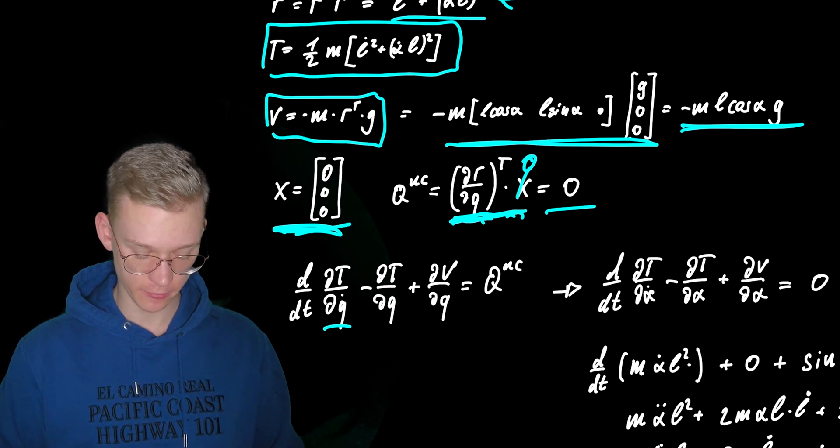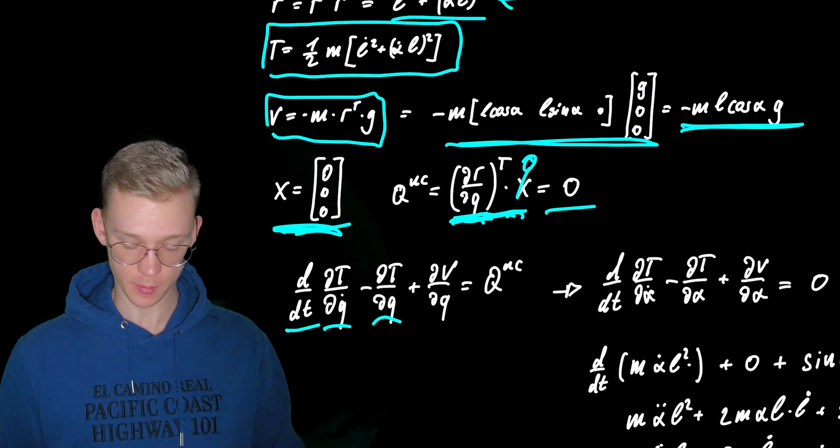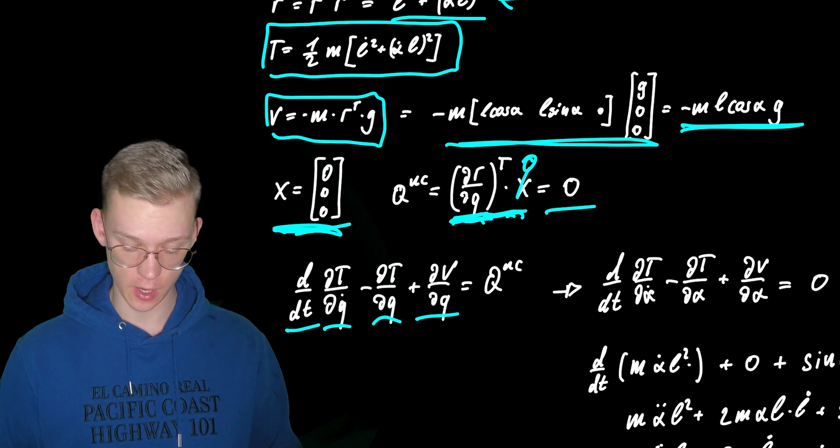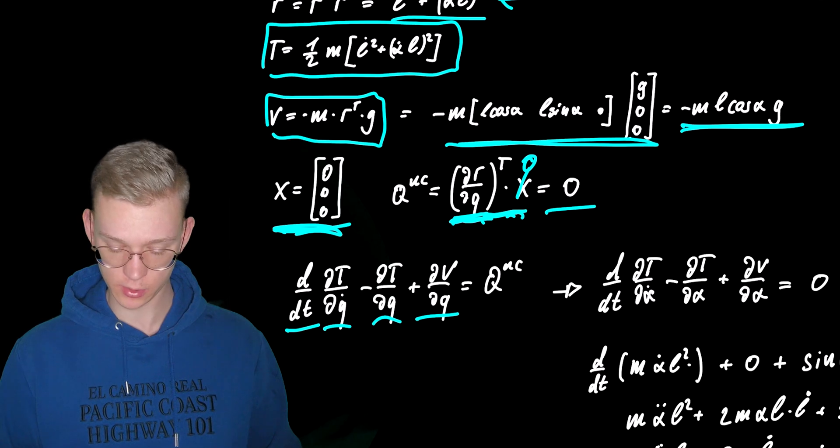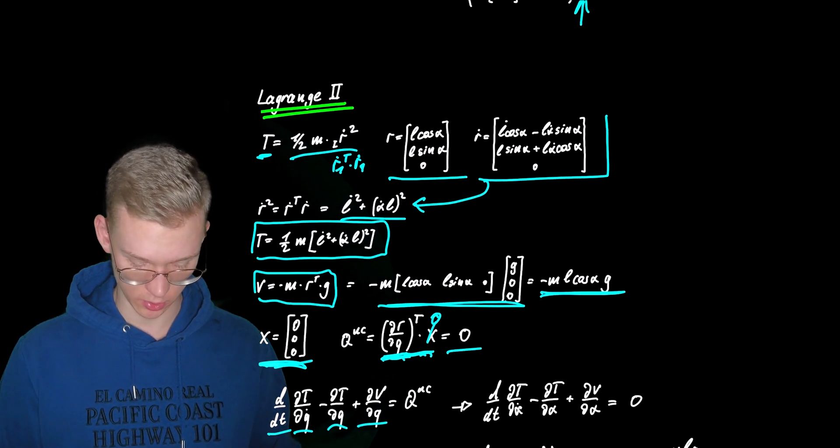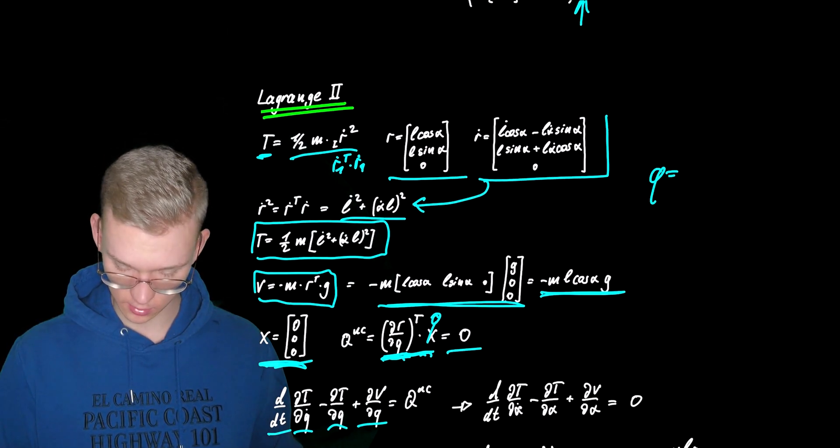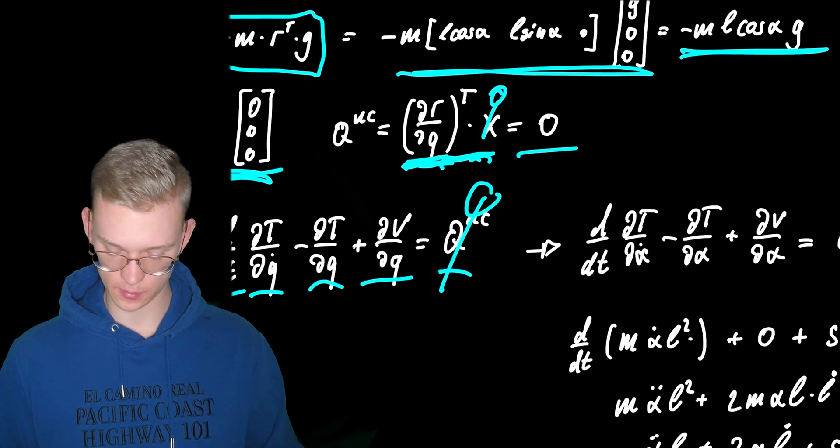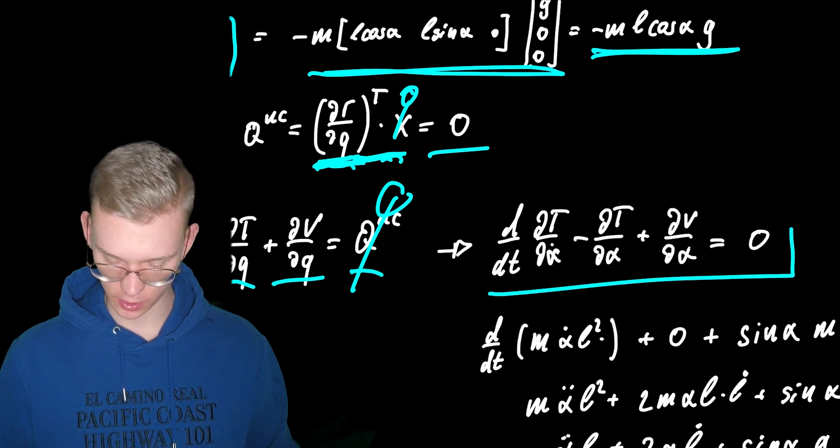We have a partial derivation and a total time derivative. Then again a partial derivation plus the partial derivative of the potential with our q's. In our case q is just alpha and it's zero. So this is our equation.